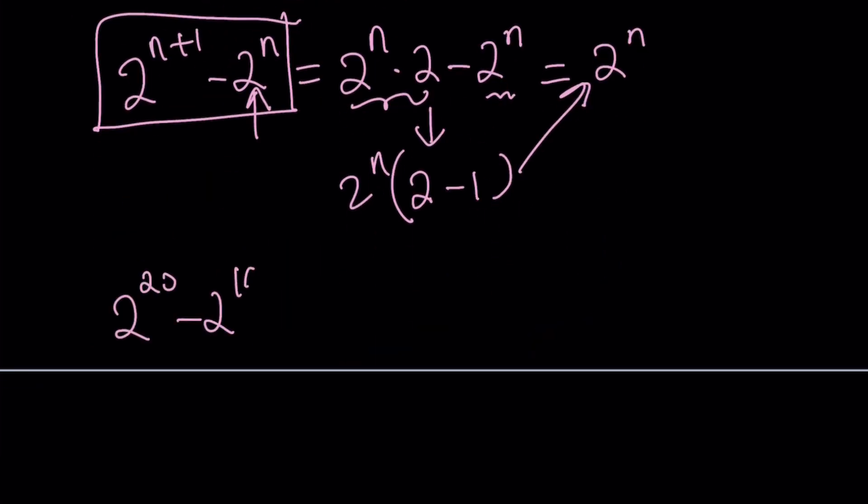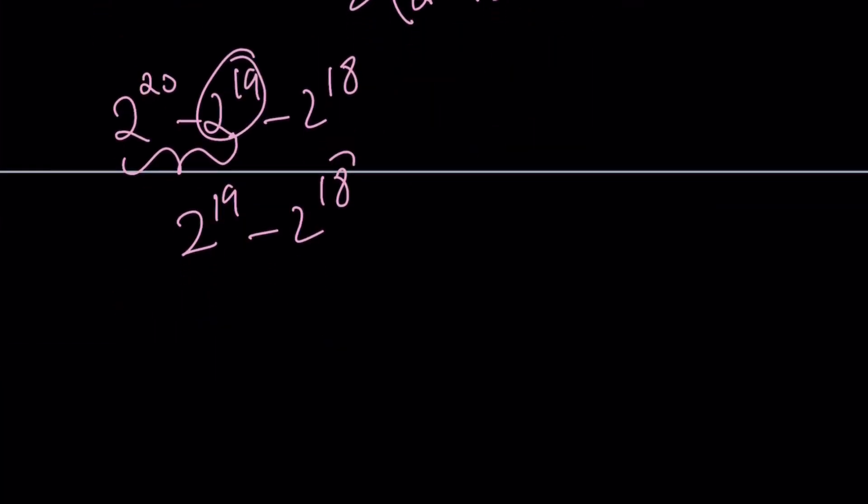So let's work it out. 2 to the power 20 minus 2 to the power 19 minus 2 to the power 18. These two numbers will give us the smaller number, which is 2 to the power 19. And then we're going to subtract 2 to the 18 from it. But it's going to give us the smaller number by the rule we just talked about. And that is going to be 2 to the power 18. And remember, hopefully you memorize this by now, 262,144 as the answer.